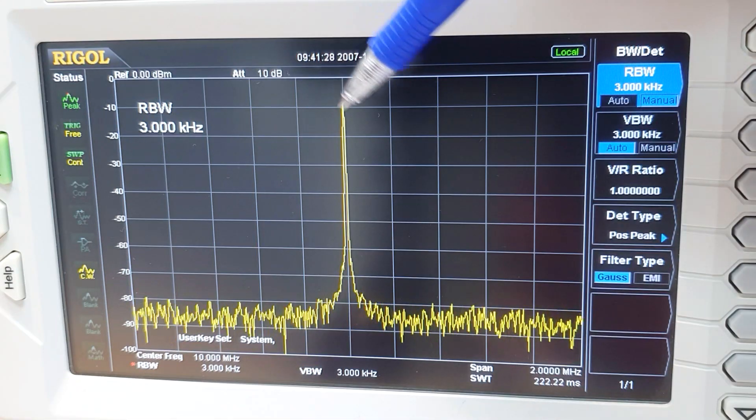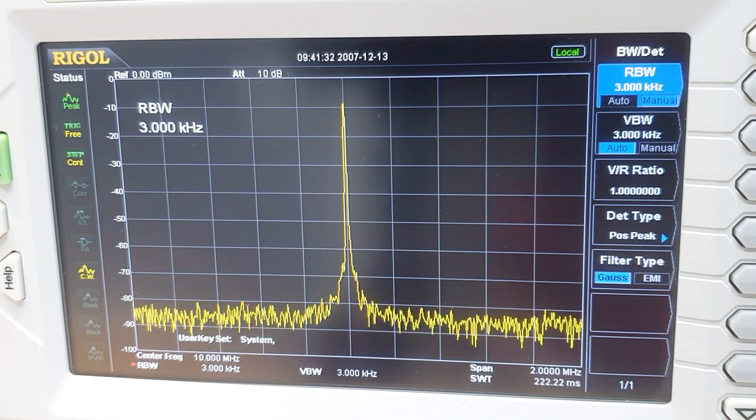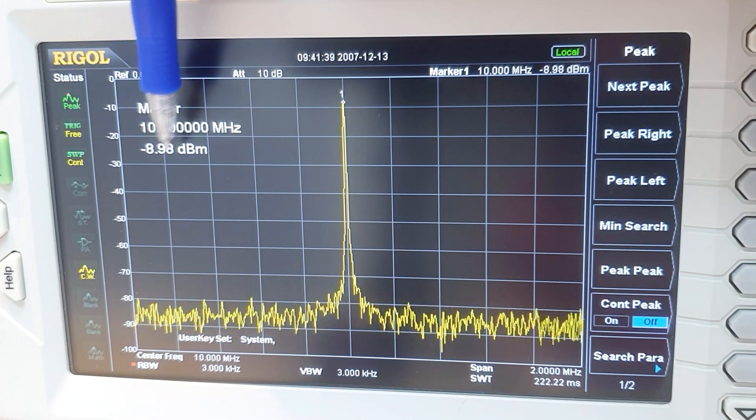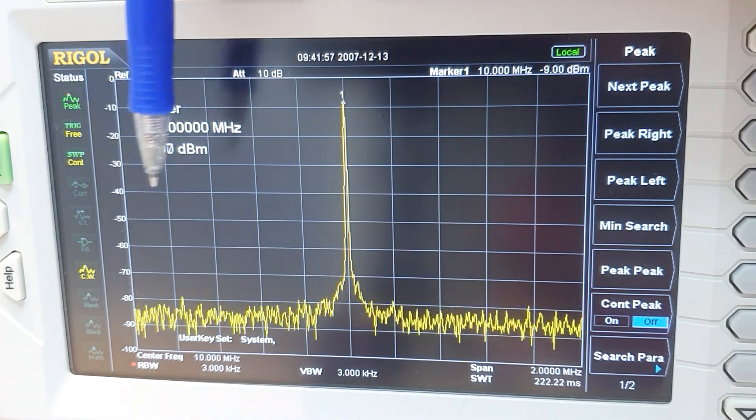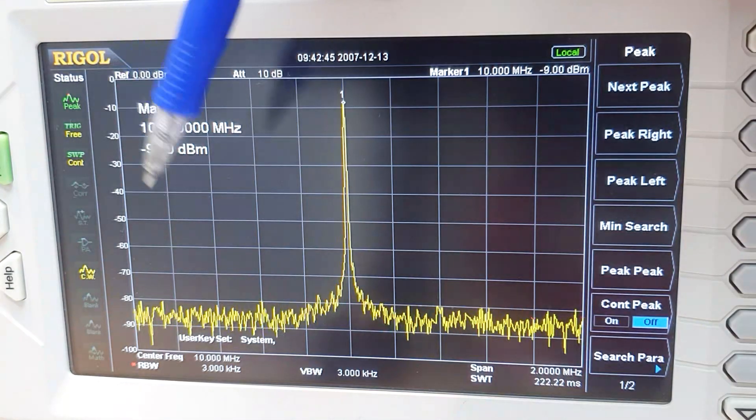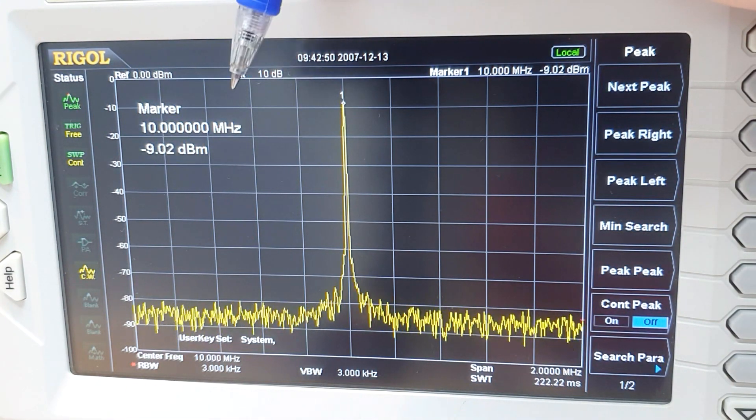We can measure the gain at this frequency here, 10 meg, by placing a peak marker here, taking the output power, negative 9 dBm, and manually compute the gain from the input negative 25 dBm. As we're gonna sweep the frequency to a lot of points to measure the gain over frequency, we can use a trick here on the spectrum analyzer to simplify the operation.